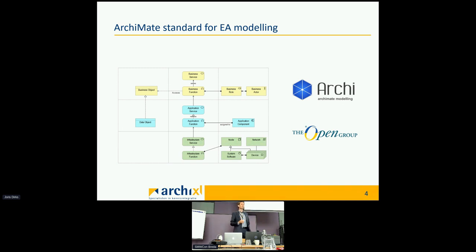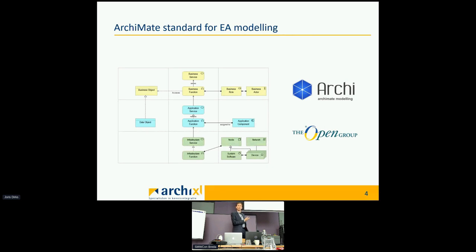A lot of you are probably familiar with tools like Archie, which is a free, even open-source tool where you can model your architecture. There's currently a version where you can store your architecture models — elements, relationships, and views — in a Git repository. There's also the Open Group, which is the owner of the ArchiMate standard; they have defined a file format to interchange architecture models between architecture tools, and we can use that.